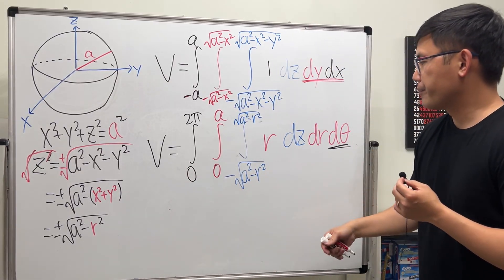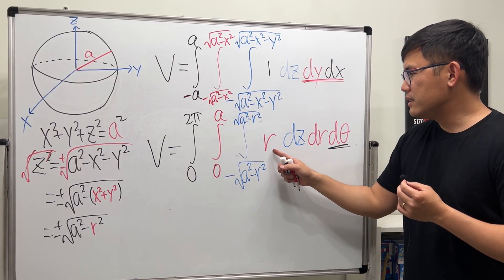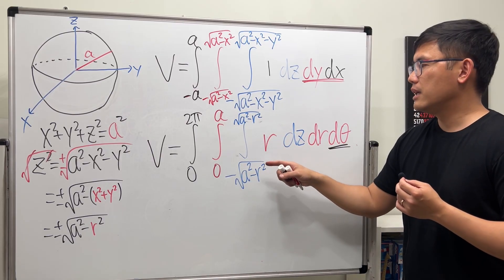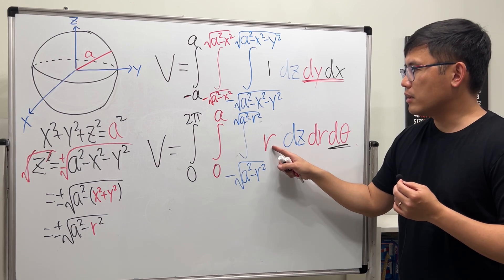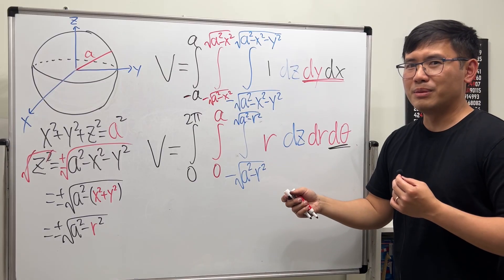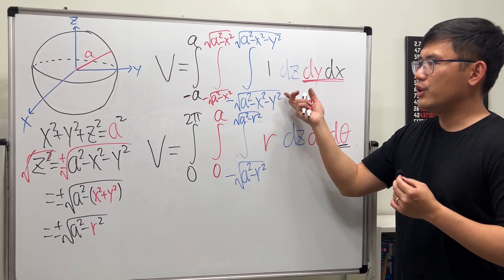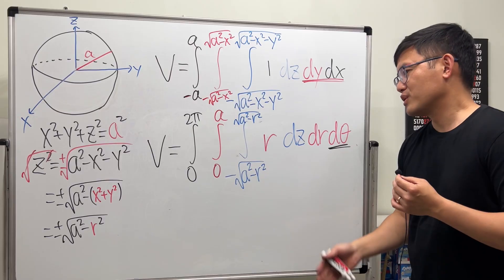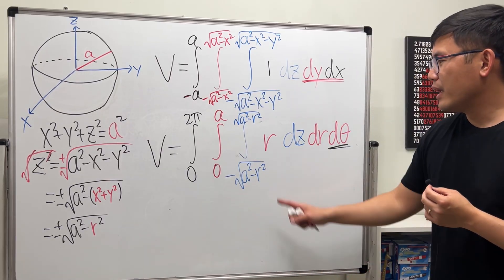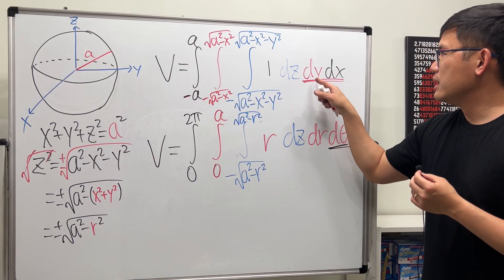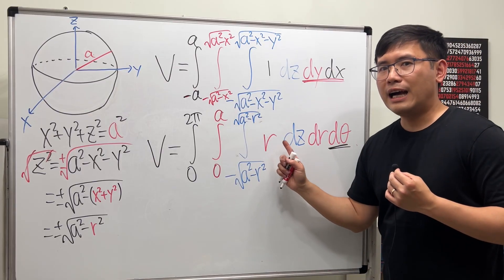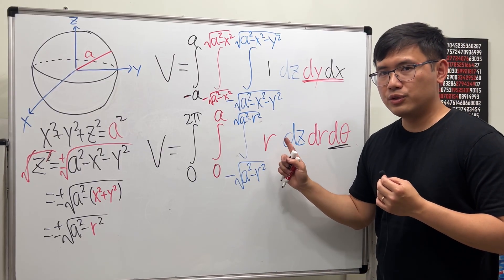Now if you look at this: when you integrate in the z world you just get z, then substitute the limits. When you have that extra factor r with the square root of (a squared minus r squared), you can just do a u-substitution — much simpler than trig substitution in the rectangular case. Remember, when you change dx dy to dr dθ, make sure you include the r.